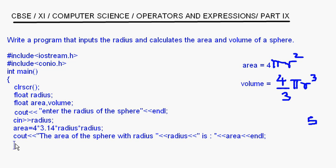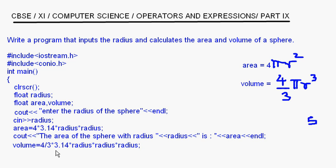Now let us calculate the volume. The volume of the sphere is 4/3 into 3.14 into radius into radius into radius. This expression has division and multiplication.